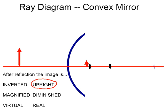The second way we determine what the image looks like is whether it's magnified or diminished. Well, we can see it's not bigger than the original. It's smaller than the original, so it's going to be diminished.